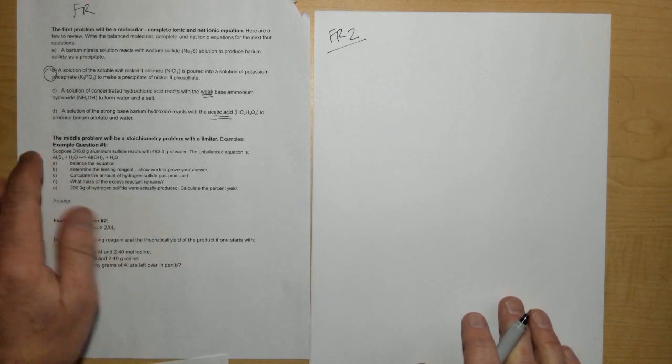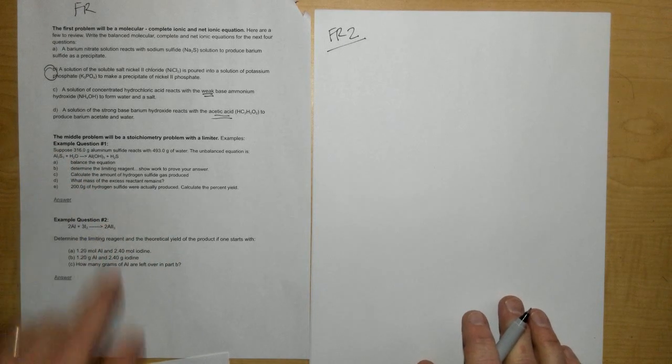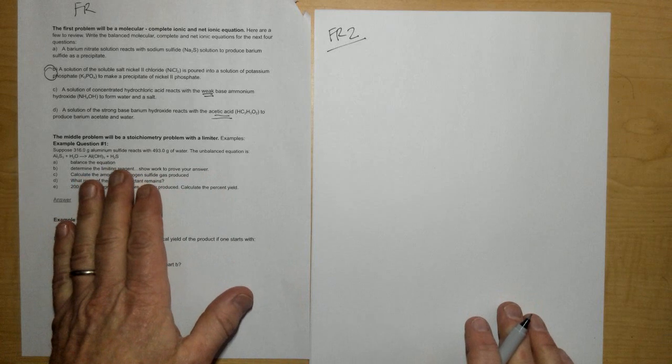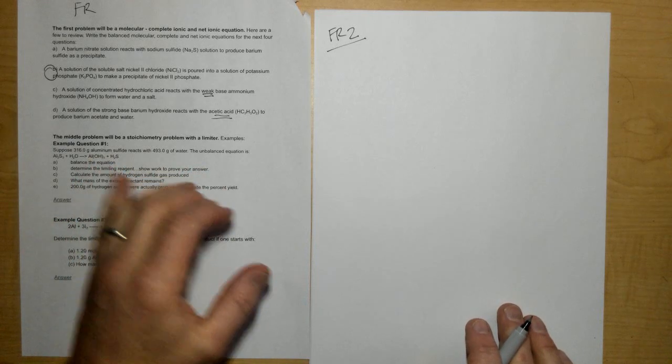Okay, this is for response to question number two. It's going to be a solution stoichiometry problem with a limiter, or at least a stoic problem with a limiter. And here's example question number one.